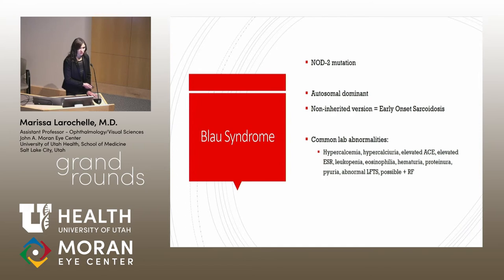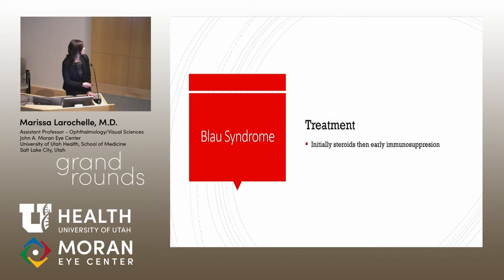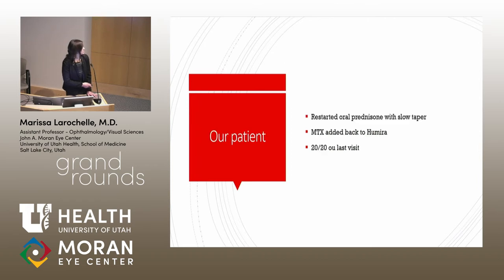There are some nonspecific inflammatory markers to look for, but these can be seen in a variety of other etiologies. Treatment, as with much of uveitis, is oral steroids and immunosuppression. Our patient was restarted on oral prednisone when we saw this eye exam — he had recently had methotrexate added back alongside Humira, so we were waiting for that to work. He remained 20/20 at the last visit, and his OCT was much improved.